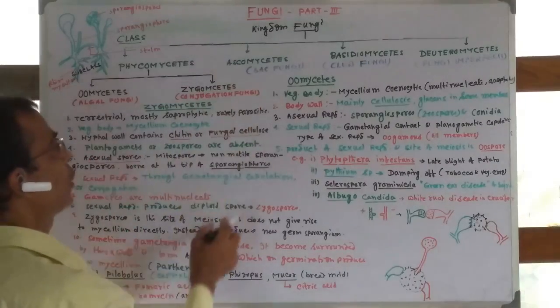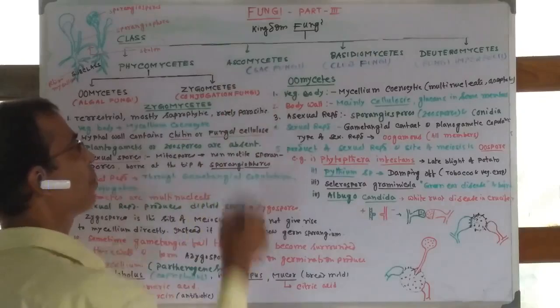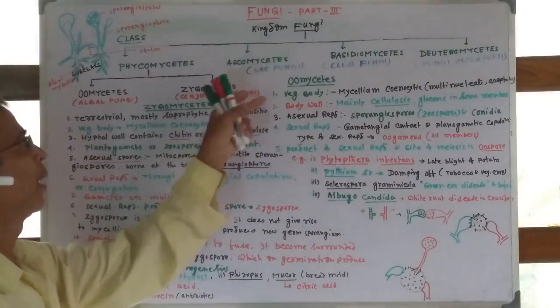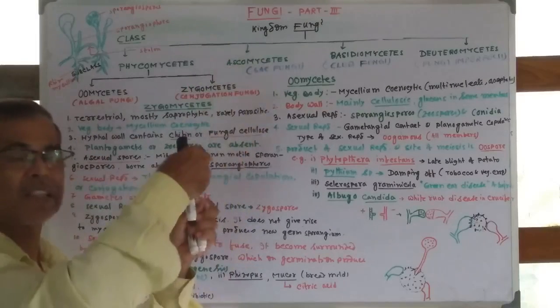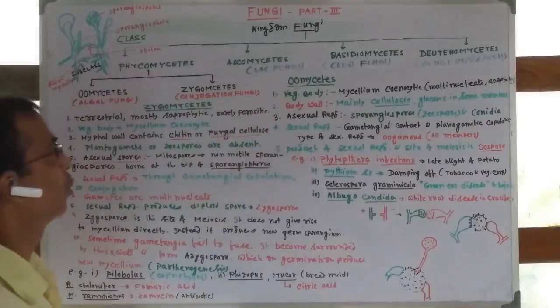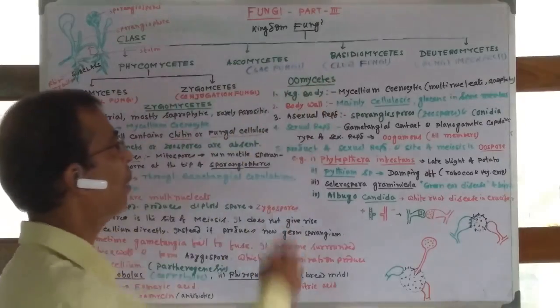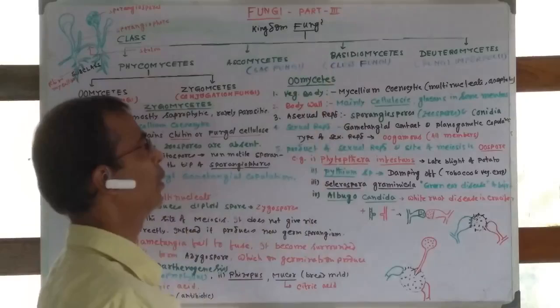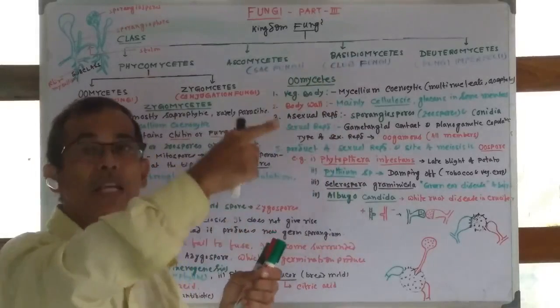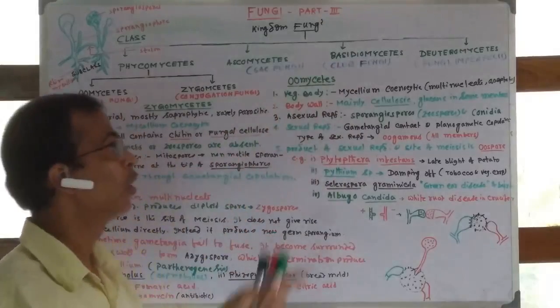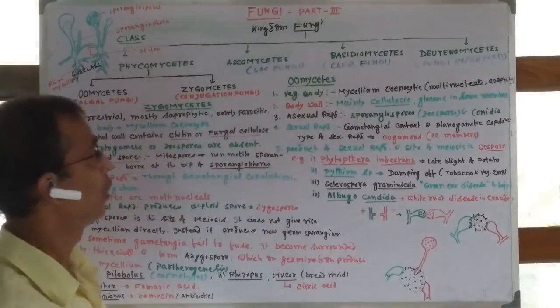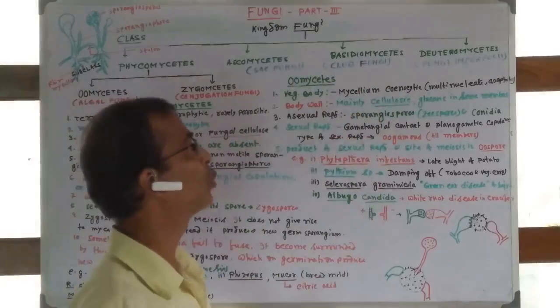Ascomycetes are also called sac fungi because during sexual reproduction they form a sac-like structure called ascus. Basidiomycetes are club fungi because during sexual reproduction they form a club-like structure, the basidium.